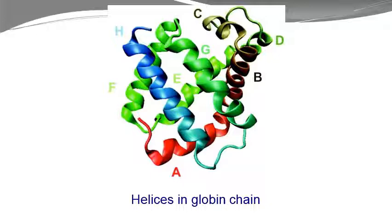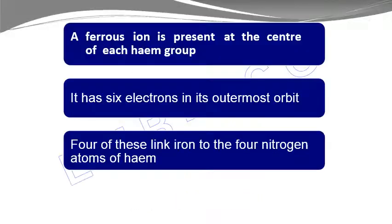In the center of each hemoglobin subunit, the heme group contains a ferrous ion. The ferrous ion has 6 coordination bonds in its outermost shell, and among these, 4 link the iron to the 4 nitrogen atoms of the heme group.